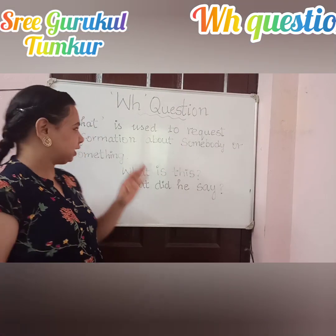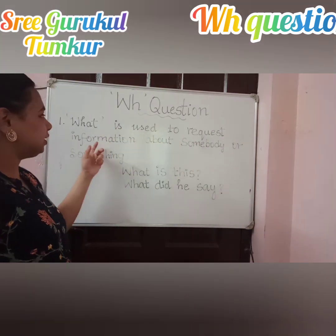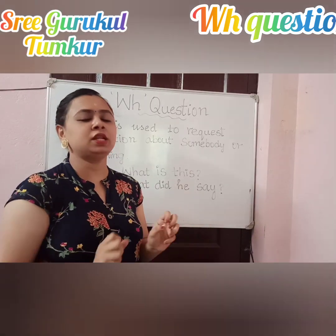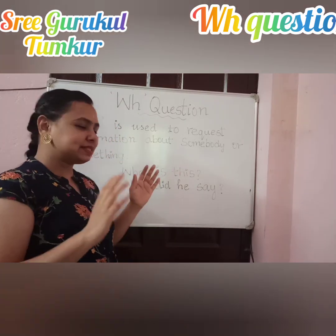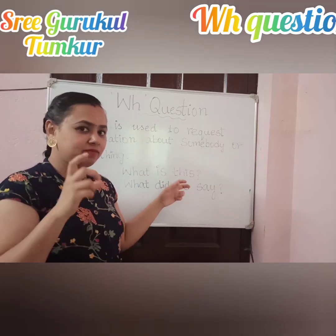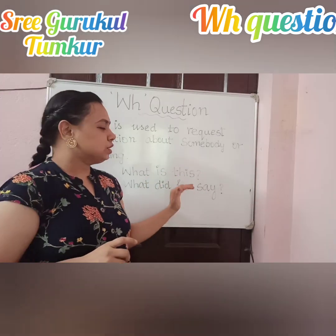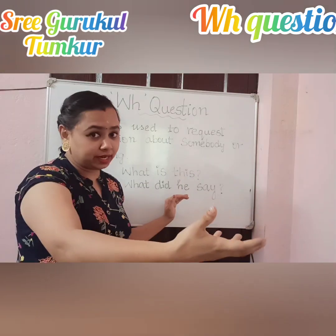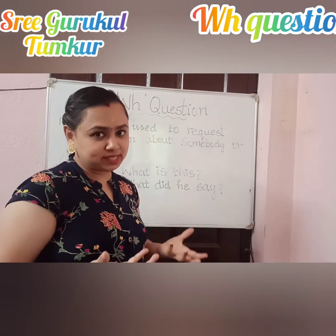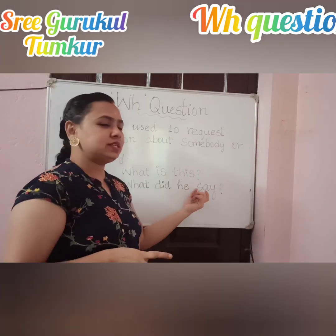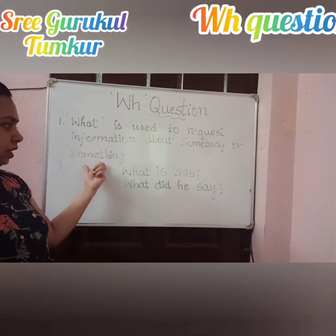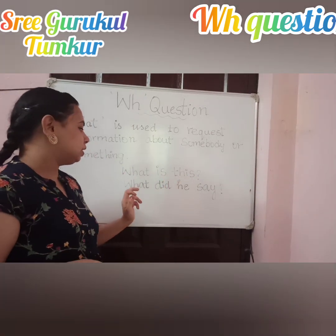The next question tag we are going to see is 'what'. What is used to request information about somebody or something. For example, 'What is this?' — we say about an object or something. And 'What did he say?' — we want to know some information about what a person said. So 'what' is used to request information about somebody or something.